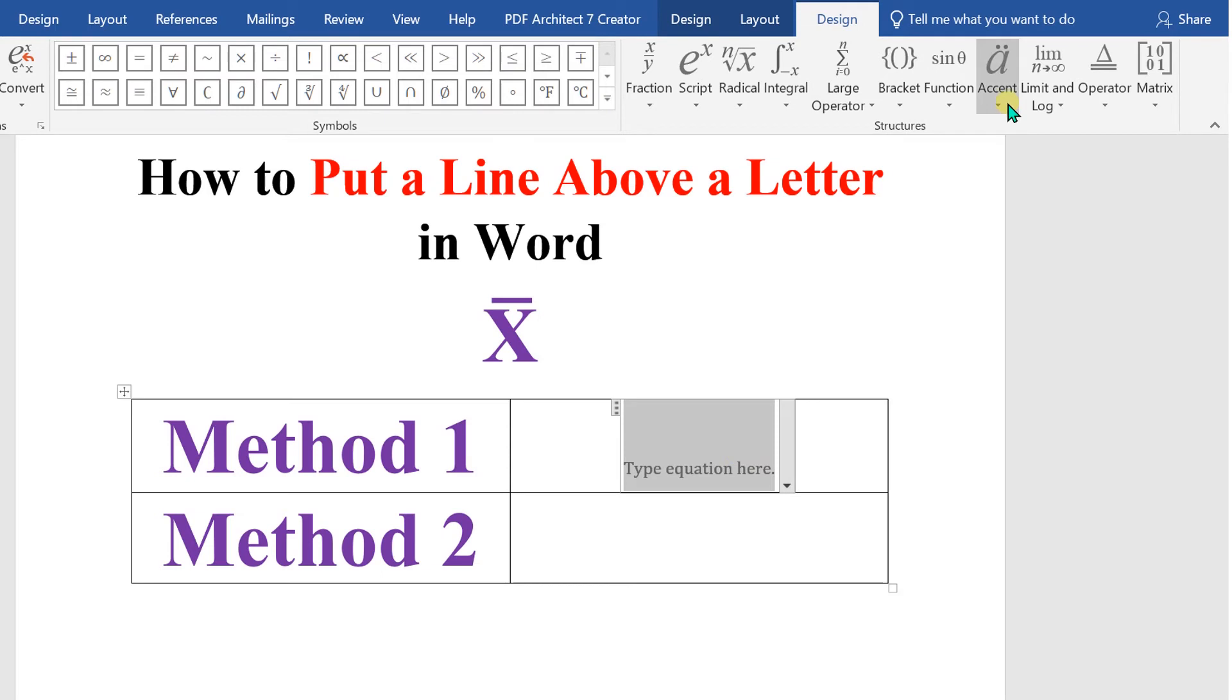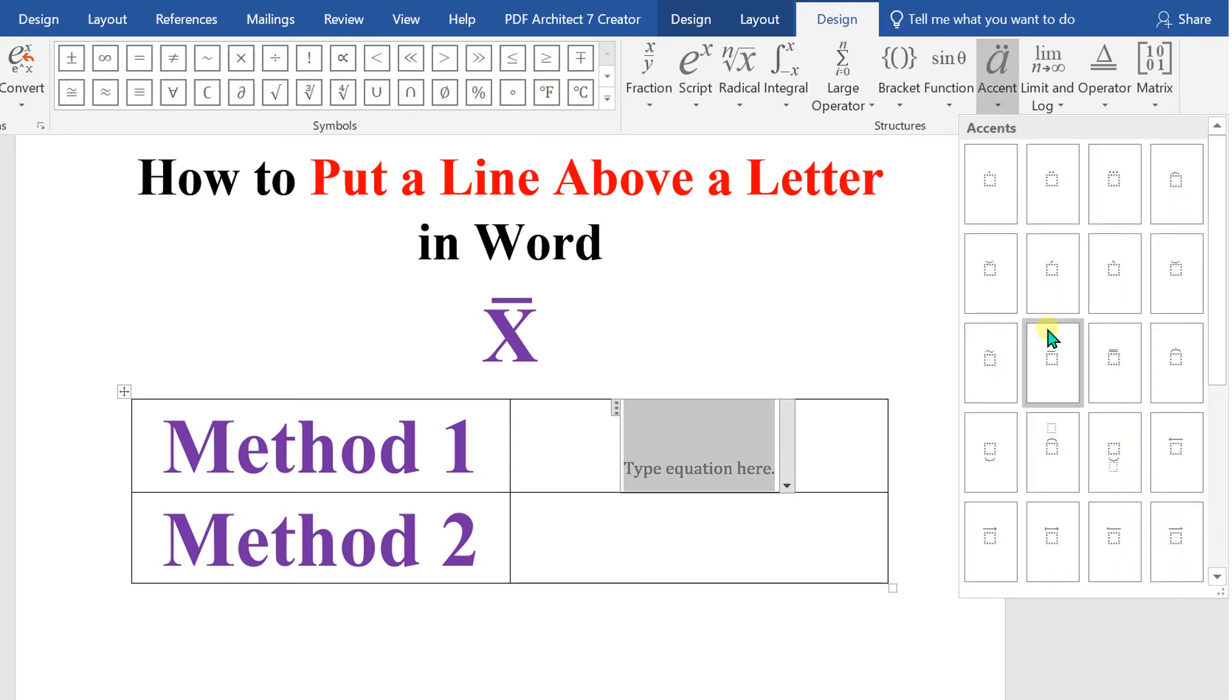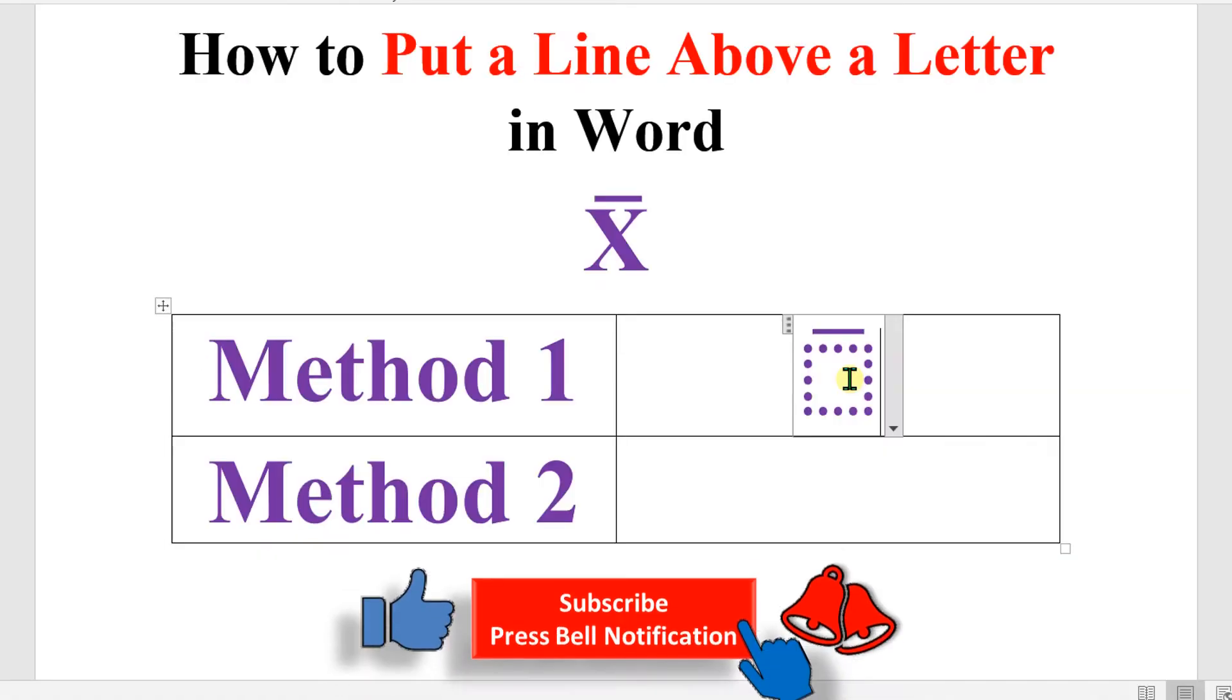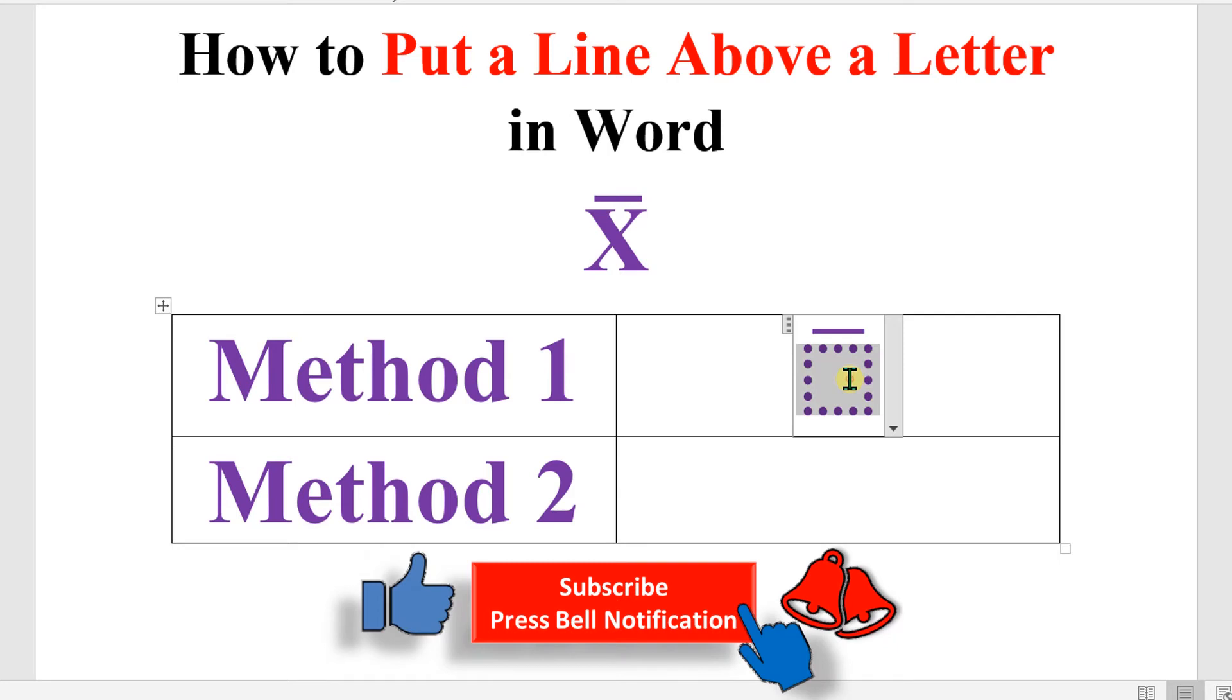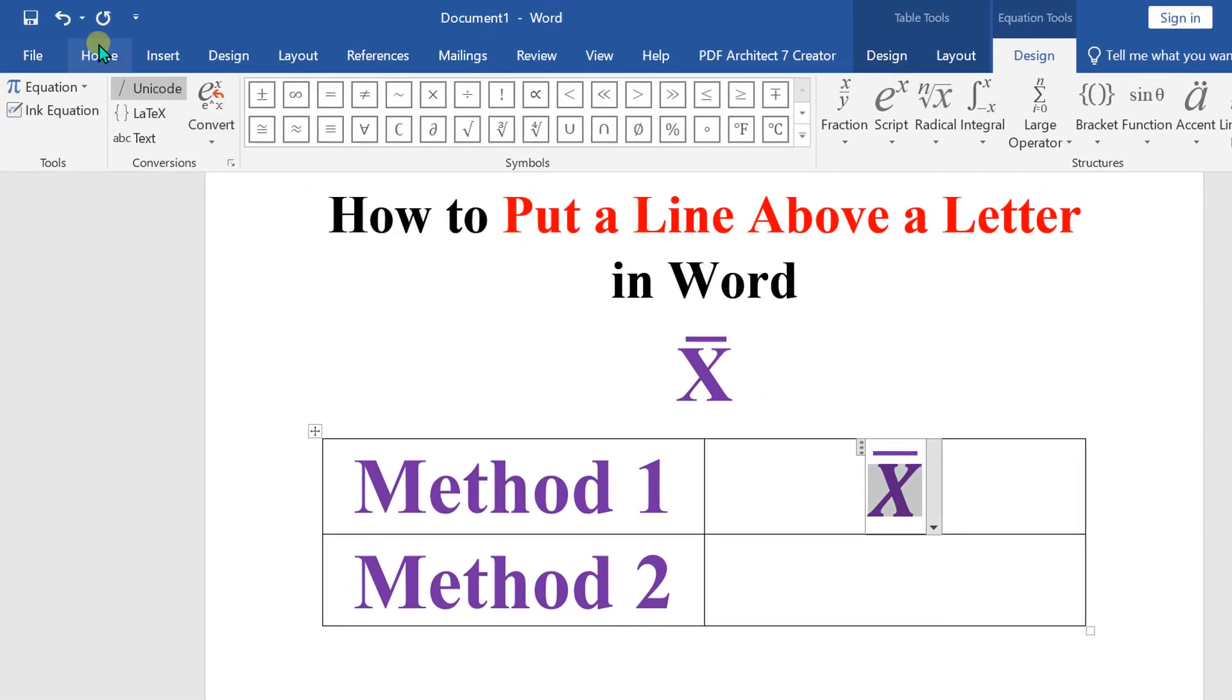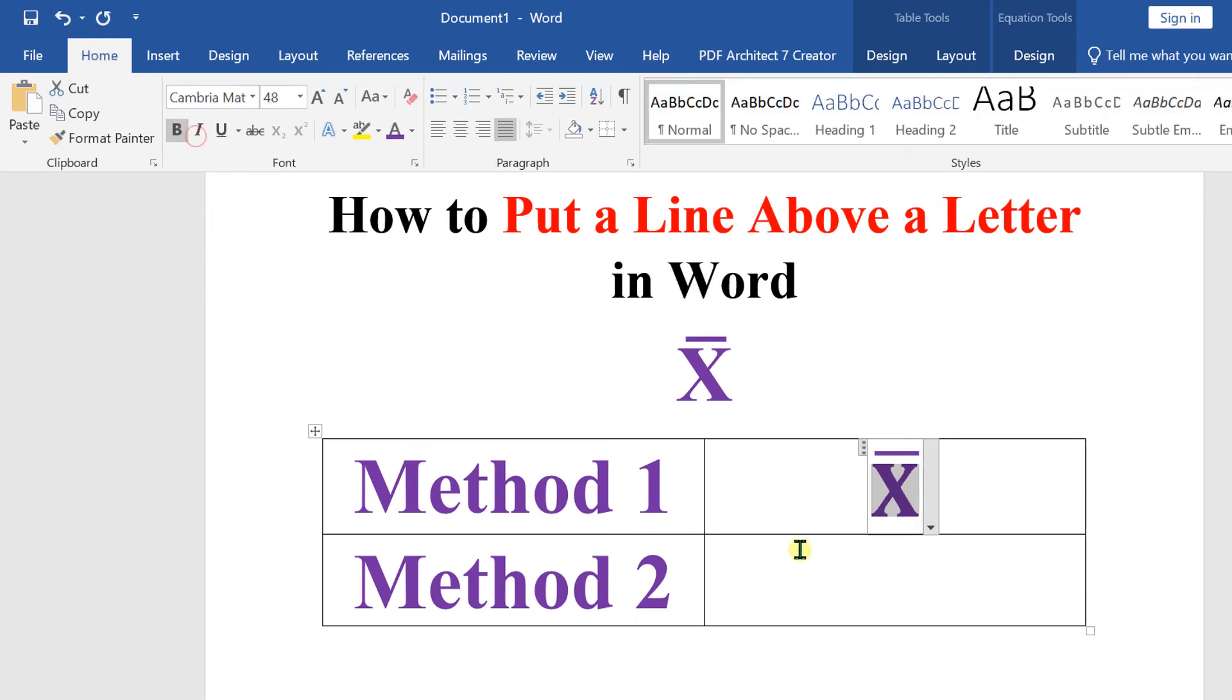Now go to the Accent option here, and under the Accent option, select this option Overhead Line with the box. Now click inside this dotted box and enter the letter or alphabet you want. You can select it and just remove the italics.